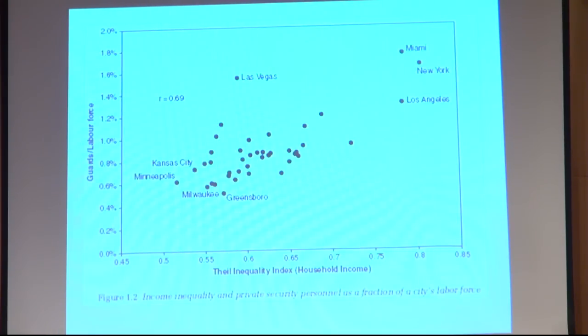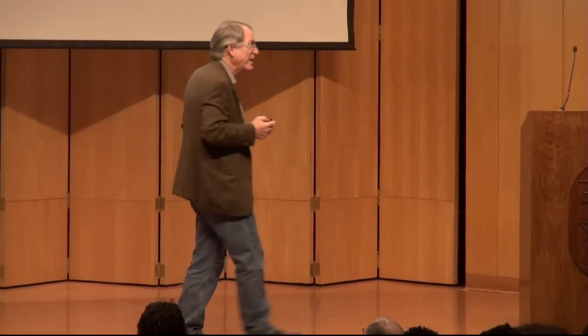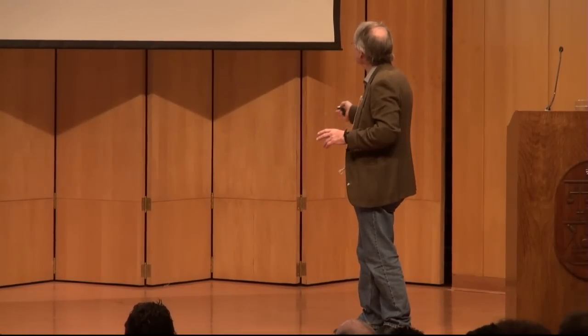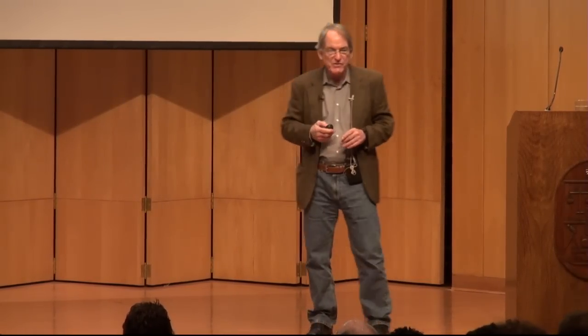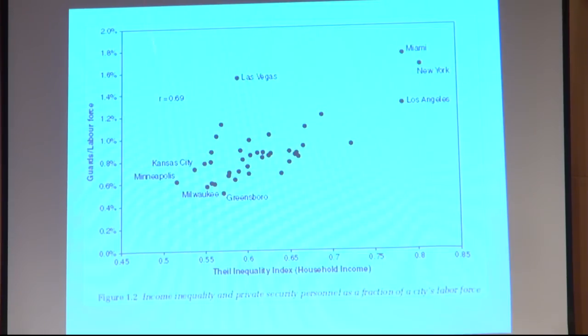Why do we spend so much on guard labor? Looking at private security personnel — guards with uniforms in urban America — and comparing them to inequality across U.S. cities, the simple correlation is almost 0.7. Cities with little inequality like Milwaukee and Greensboro have very little guard labor, while cities famous for crime and inequality have much more. So guard labor and inequality are strongly correlated.